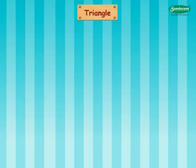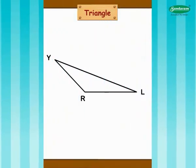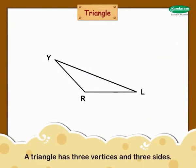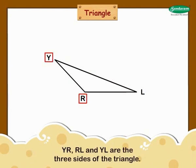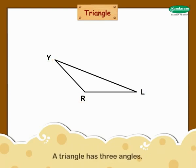Triangle. A triangle has three vertices and three sides. Y, r, and l are the vertices of this triangle. The three sides are yr, rl, and yl. A triangle has three angles.